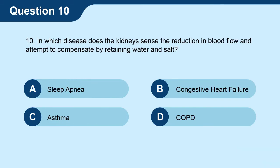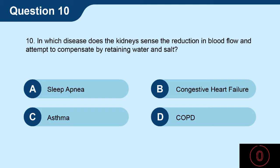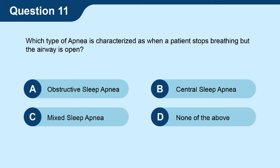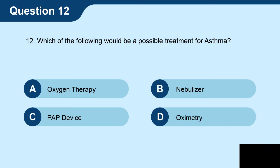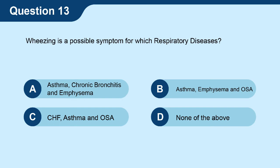Question nine: what happens when you have COPD caused by emphysema? Question ten: in which disease do the kidneys sense a reduction in blood flow and attempt to compensate by retaining water and salt? Question eleven: which type of apnea is characterized as when a patient stops breathing? Question twelve: which of the following would be a possible treatment for asthma? Question thirteen: wheezing is a possible symptom for which respiratory diseases?